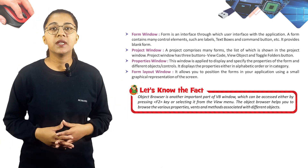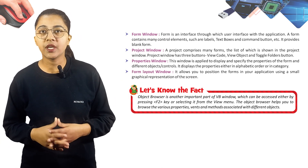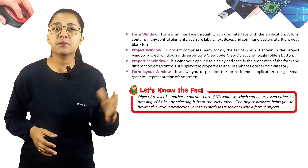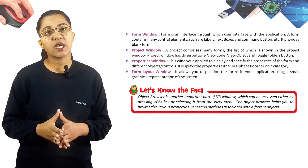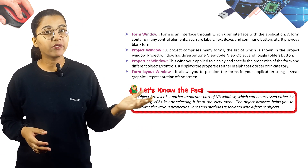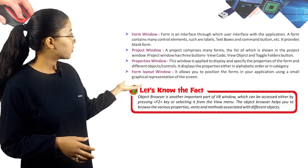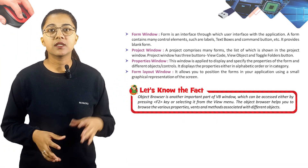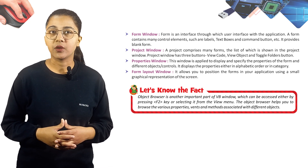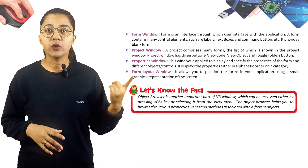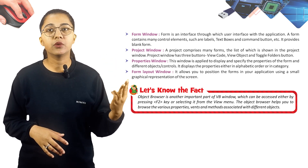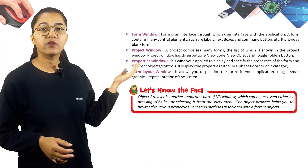The Form Window is an interface through which the user interacts with the application. A form contains many control elements such as labels, text boxes, and command buttons. The Project Window lists the many forms that comprise a project; it has three buttons: View Code, View Object, and Toggle Folder.